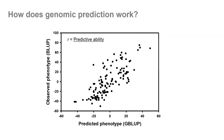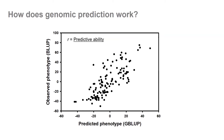We measure predictive ability through the correlation of observed and predicted phenotypes. In tree breeding, the impact is clear: instead of waiting years to collect data on growth or wood quality from field trials, we can make these predictions very early on — essentially as soon as we can get enough needles to extract DNA, which is just a few months.